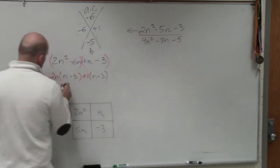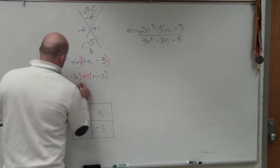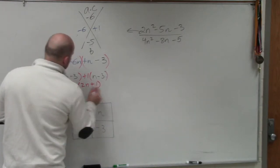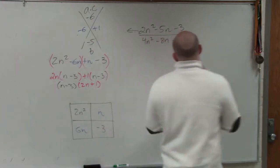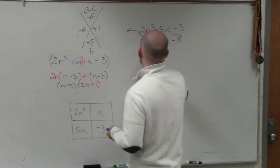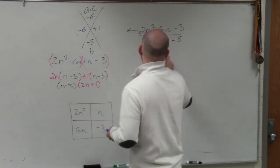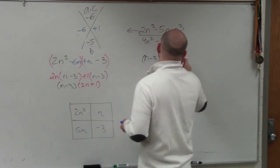Then what you guys recognize is now that out of these two, we can factor out the n minus 3. So when I factor out an n minus 3, I'm left with a 2n plus 1. So that would have been my factored form up there, which would be n minus 3 times 2n plus 1.